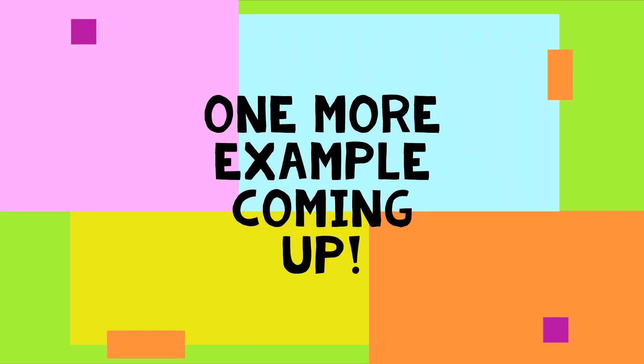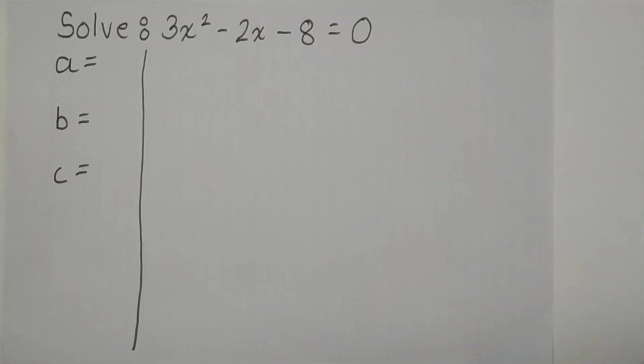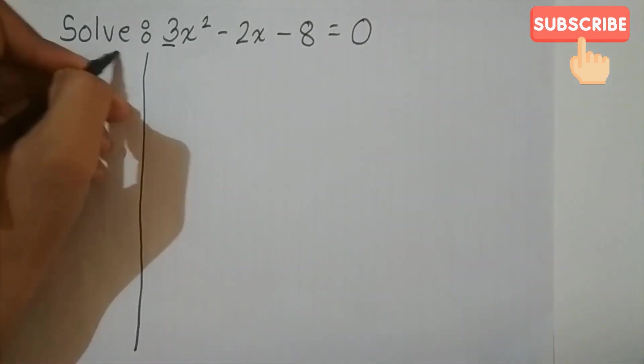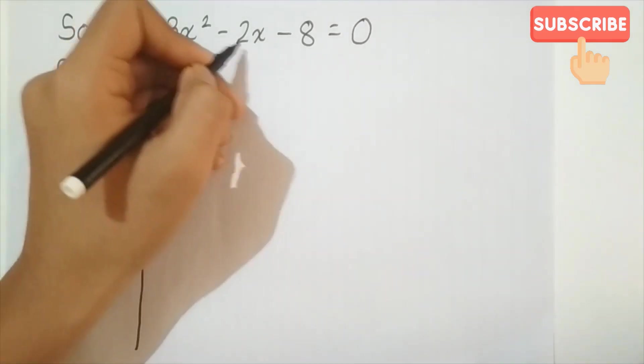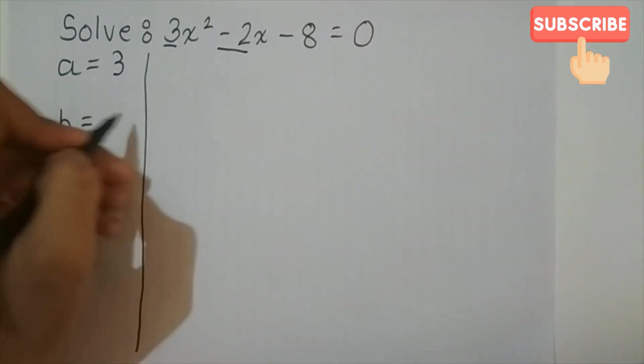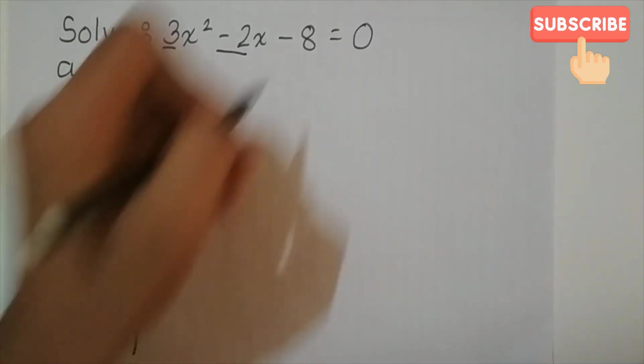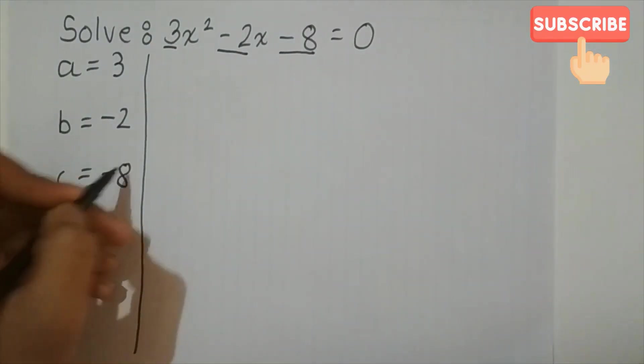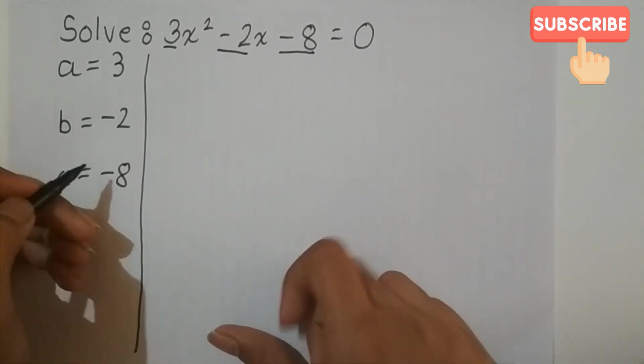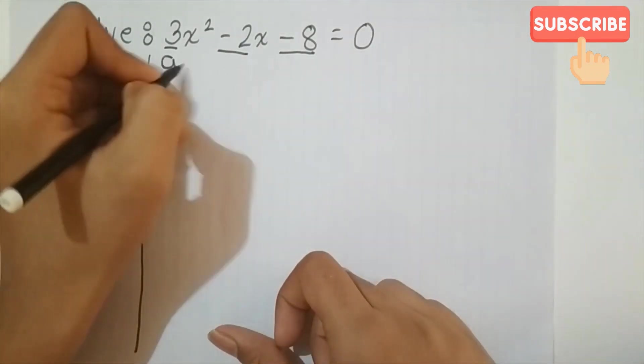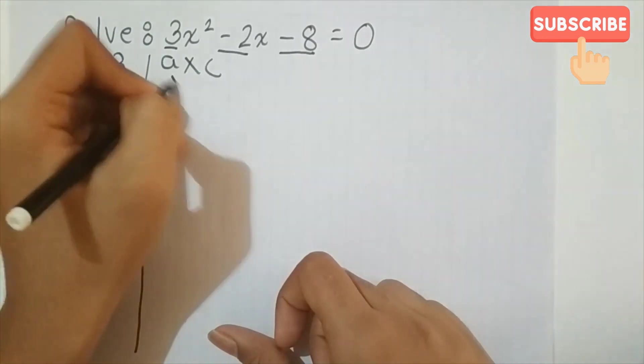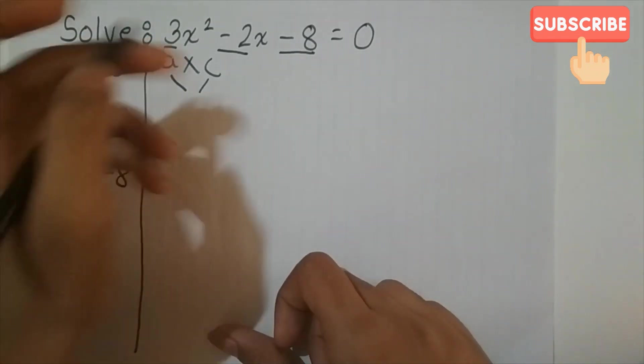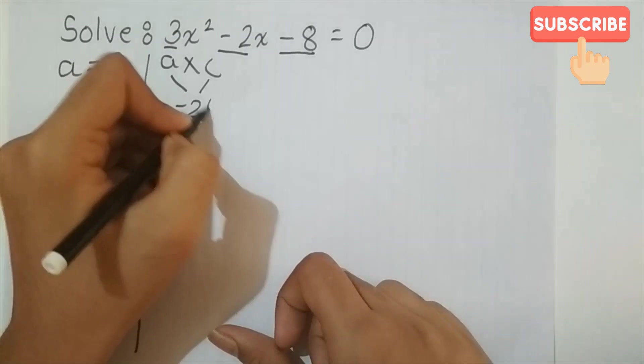One more example coming up. So in this example, a is equal to 3, b is equal to minus 2, and c is equal to minus 8. And then a into c is 3 into minus 8, so that is minus 24.